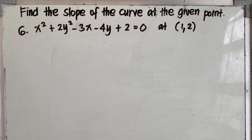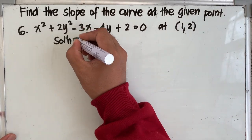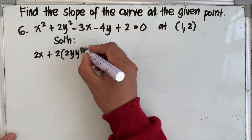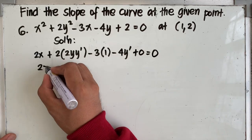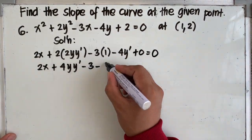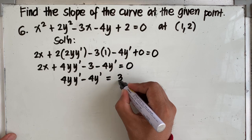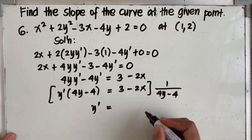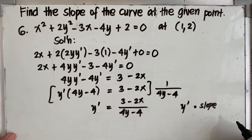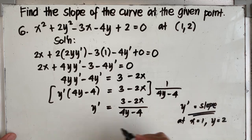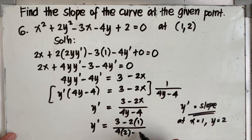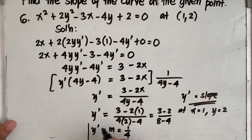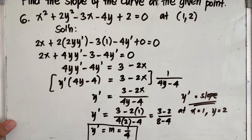Problem number 6: find the slope of the curve at the given point. To obtain the slope, we differentiate the given equation and then substitute the values x equal to 1 and y equal to 2. It should be noted that y prime is equal to the slope of the curve, and the slope of the curve is 1 fourth.